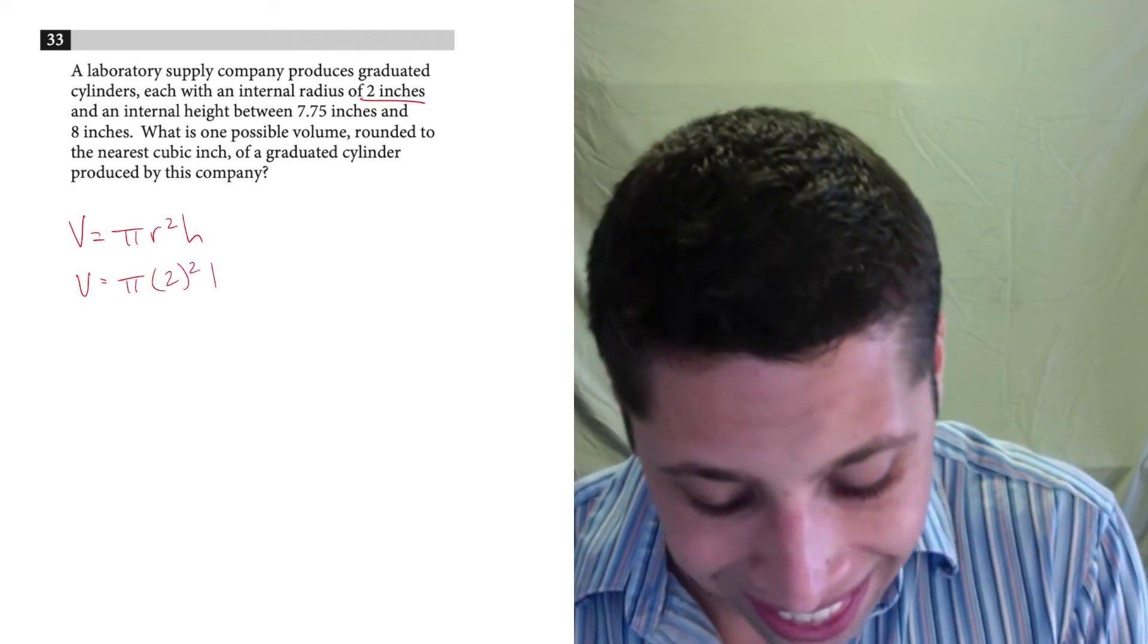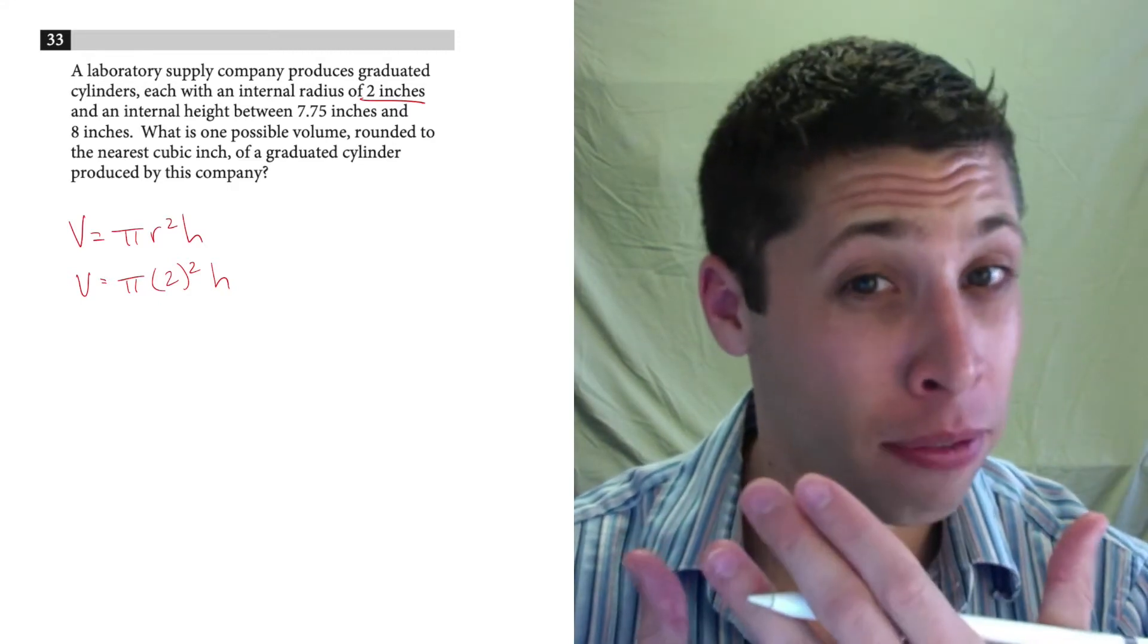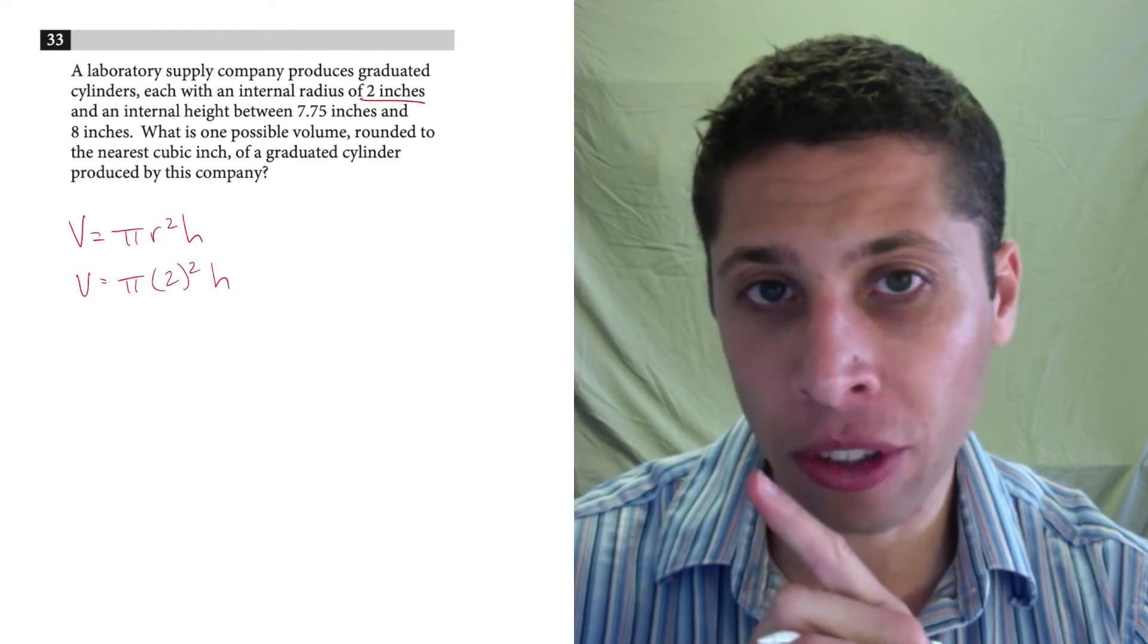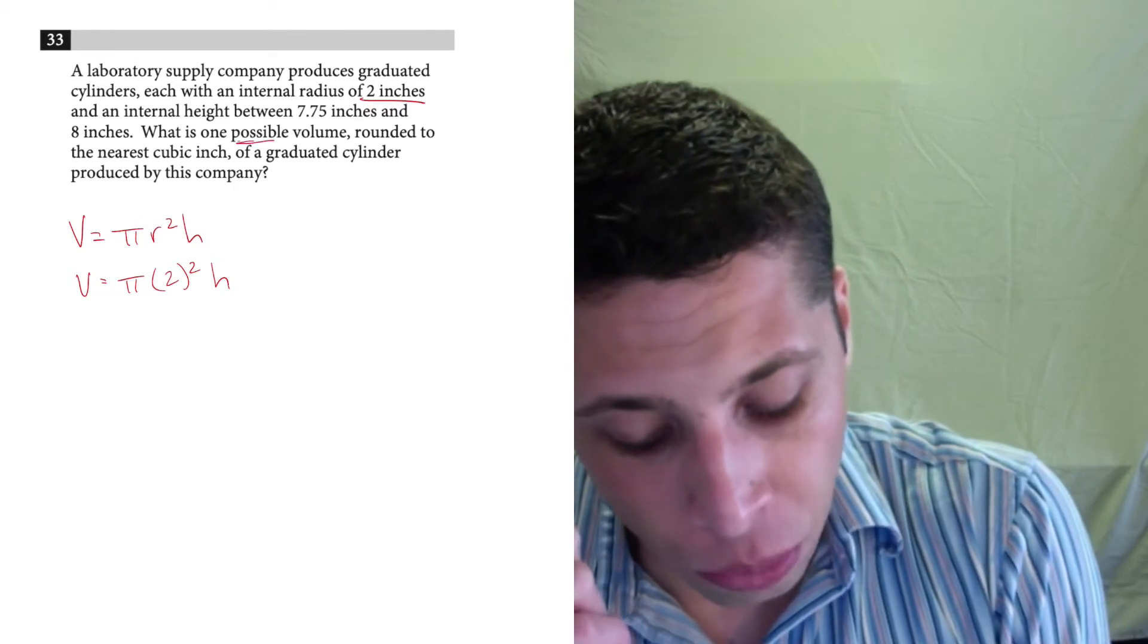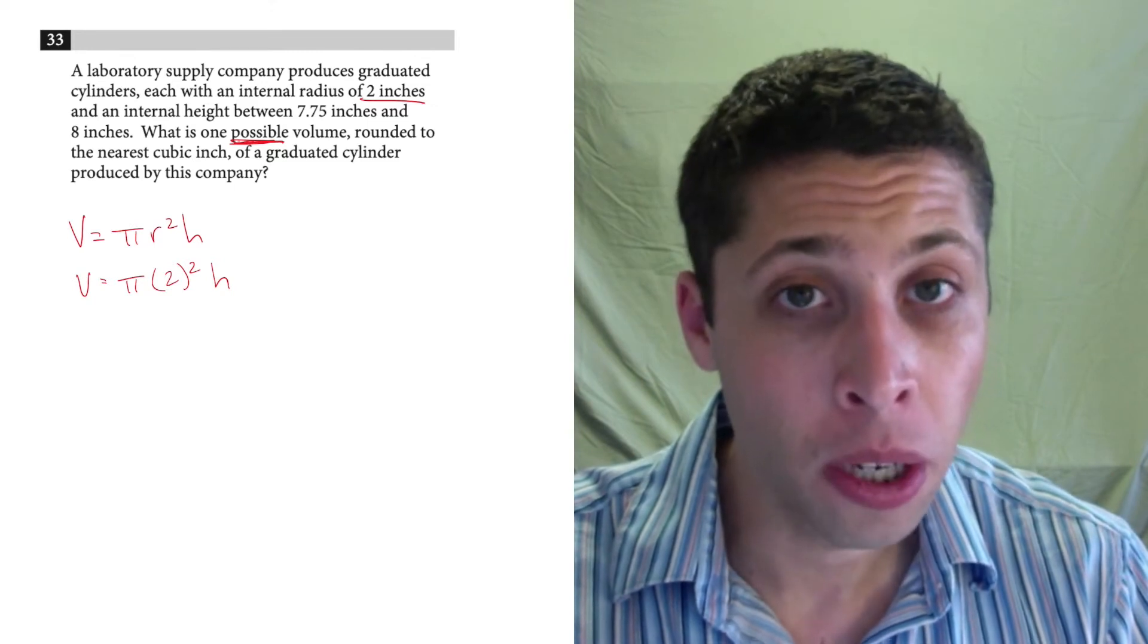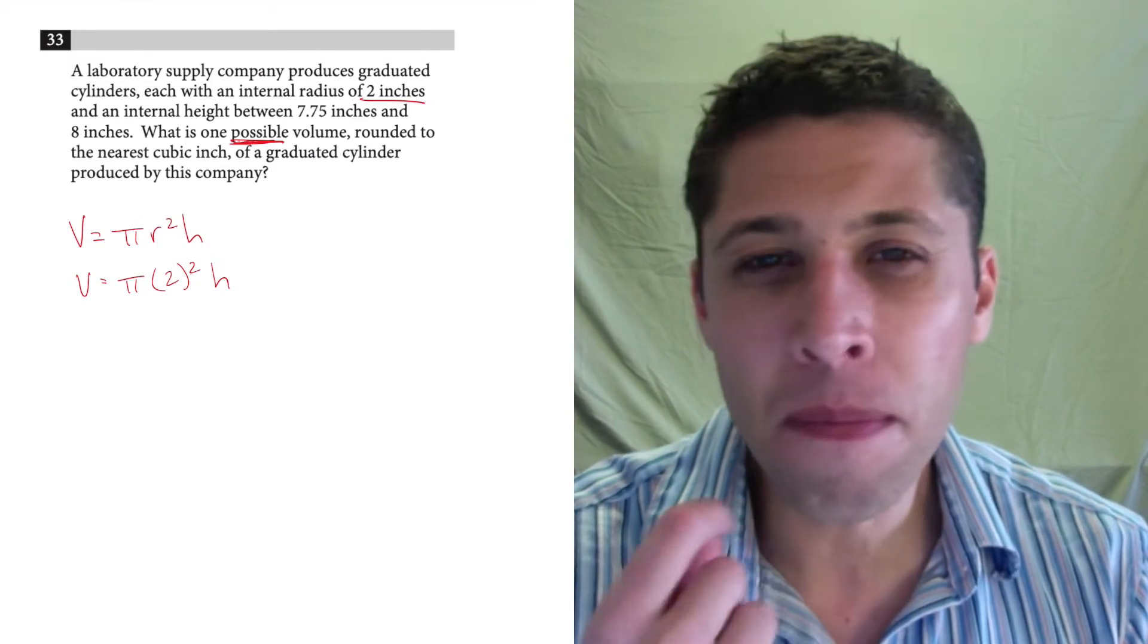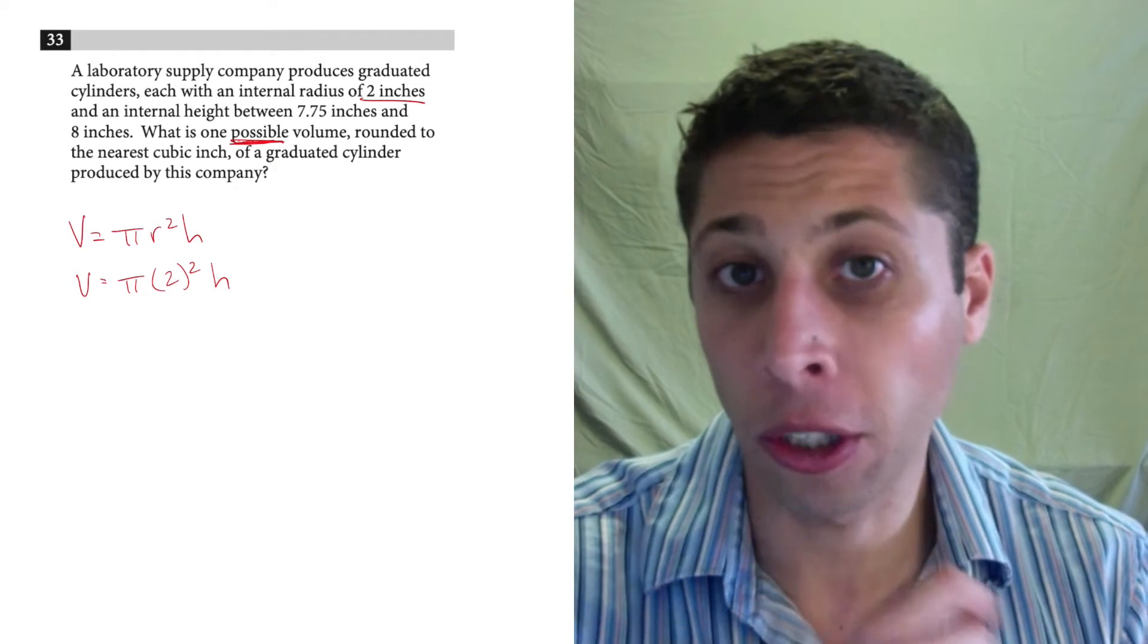So the other problem in this question that kind of throws people off is that the height is a little ambiguous. This is a good example just to acclimate yourself to the SAT's wording. When they say that there is one possible value, what they mean is that there's multiple answers to this question. And that's going to mean that you probably need to make a decision somewhere in your process.